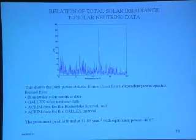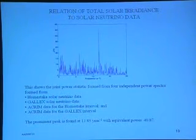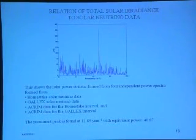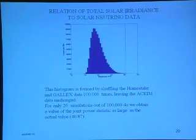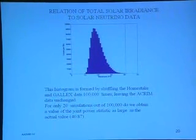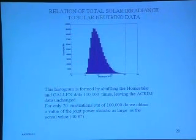When you combine these four data sets — GAL-X and Akron for the GAL-X interval, Homestake and Akron for the Homestake interval — you get a tremendous peak with a power of 40, way above the noise level, with a sharply defined frequency at 11.85 cycles per year. A shuffle test shows there are only about two chances in 10,000 of getting a statistic this large, playing around only with the neutrino data while leaving the Akron data unchanged. If you shuffled the Akron data as well, the result would be even more significant.